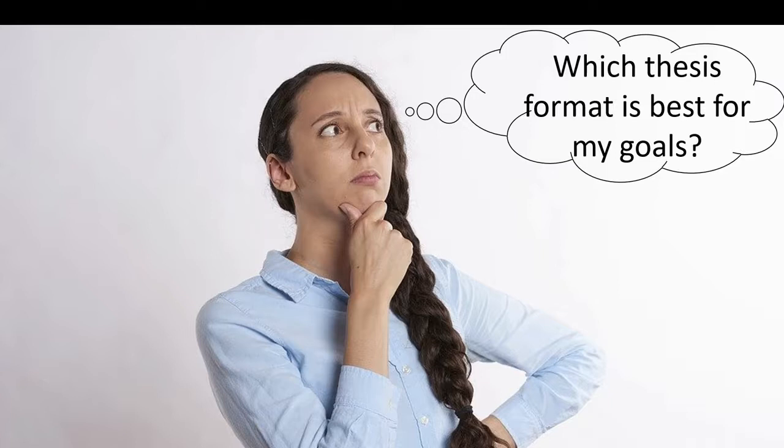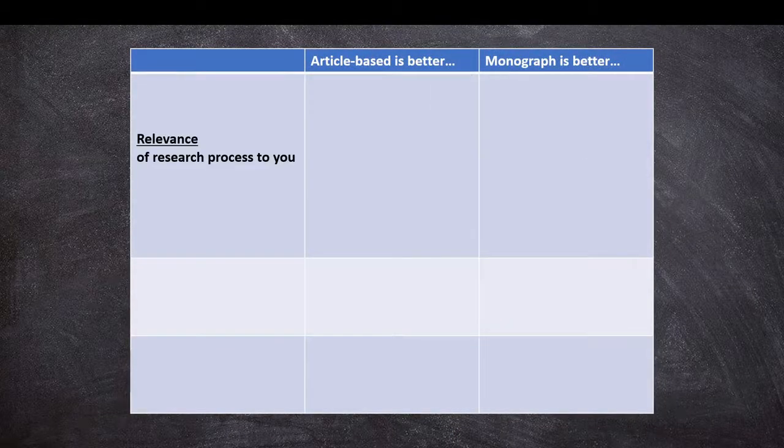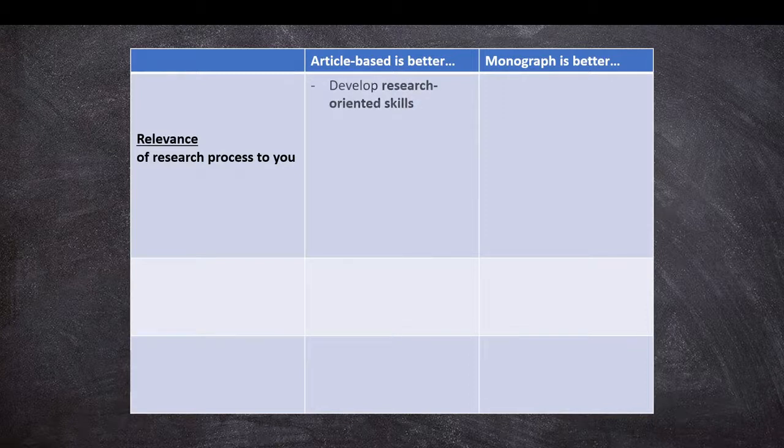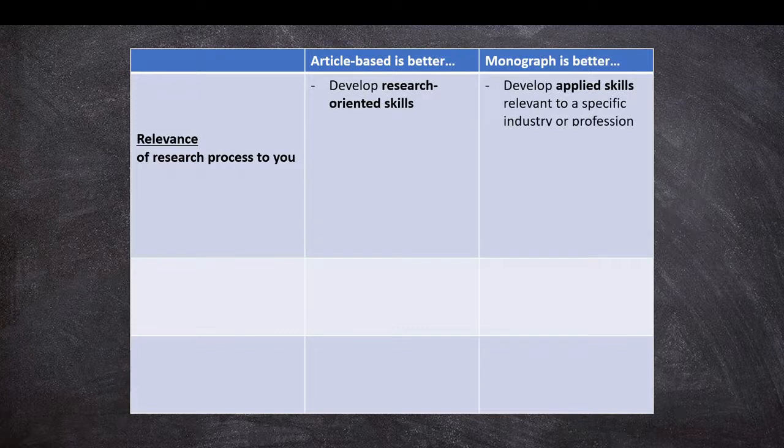What's the relevance of the research process to you? An article-based PhD and kappa might be better if you are trying to develop research-oriented skills for yourself, whereas a monograph is maybe better if you're trying to develop applied skills relevant to a specific industry or a profession.